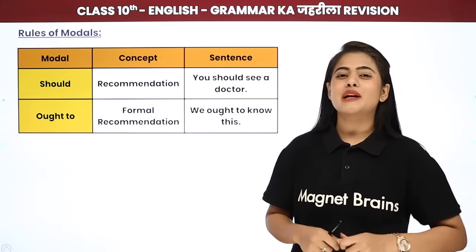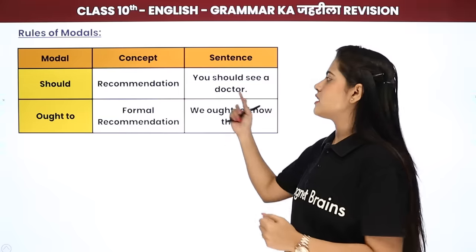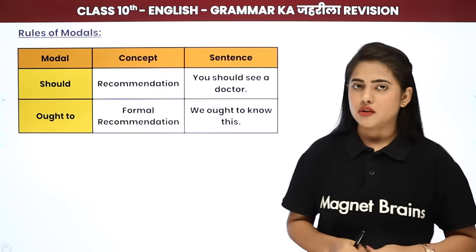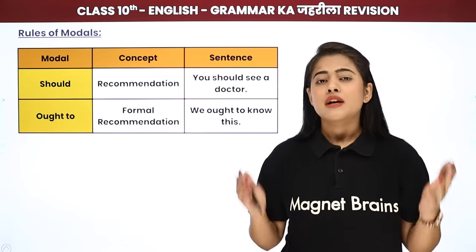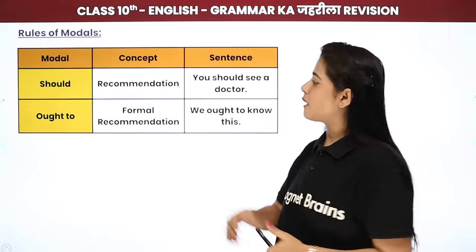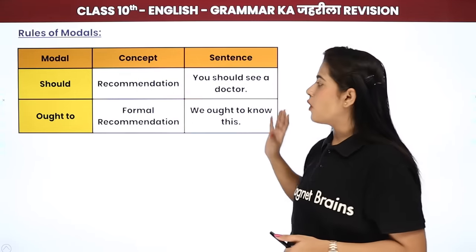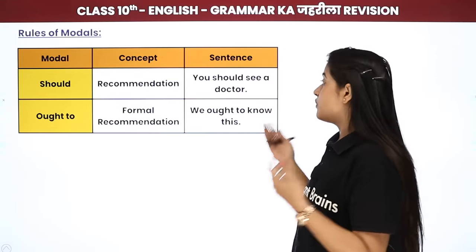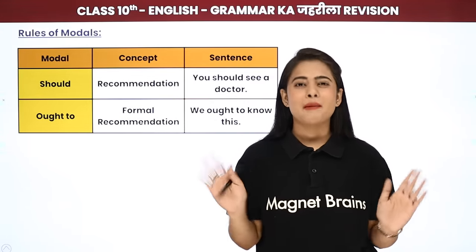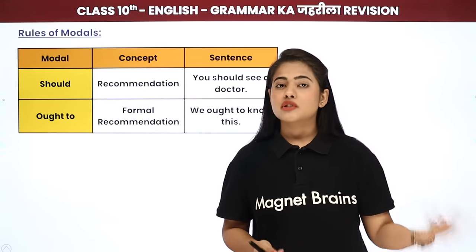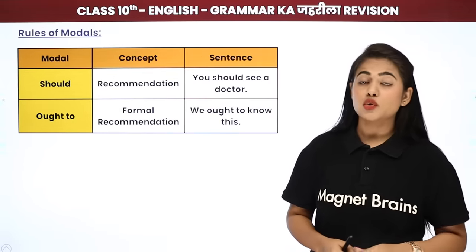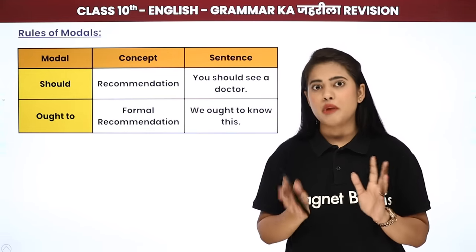Next hai SHOULD aur OUGHT TO. SHOULD matlab — ye karna chahiye. It is a recommendation. Agar kisi cheez mein kuch recommend kiya ja raha hai — mandatory nahi, but karna aisa chahiye — that is SHOULD. For example: 'You should see a doctor.' OUGHT TO is used when the recommendation is more formal. For example: 'You ought to know this' — suppose koi job ke liye gaya aur usne contract padha nahi sign karke aagaya. Then someone would say: 'You ought to know this' — tumhe ye pata hona hi chahiye tha — in a very formal, respectful manner.